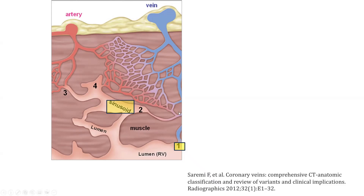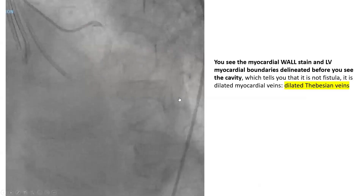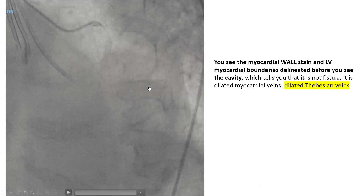Those Thebesian veins may drain directly into the cavity or may go through sinusoid lakes before eventually draining into the cavity. When that Thebesian vein or Thebesian sinusoid is dilated, you may have the appearance we saw on our angiogram. And when they are dilated, that dilatation is more common in the left ventricle. That's why we see those dilated Thebesian veins more commonly on the left ventricle, even though Thebesian veins are present in all cavity walls.